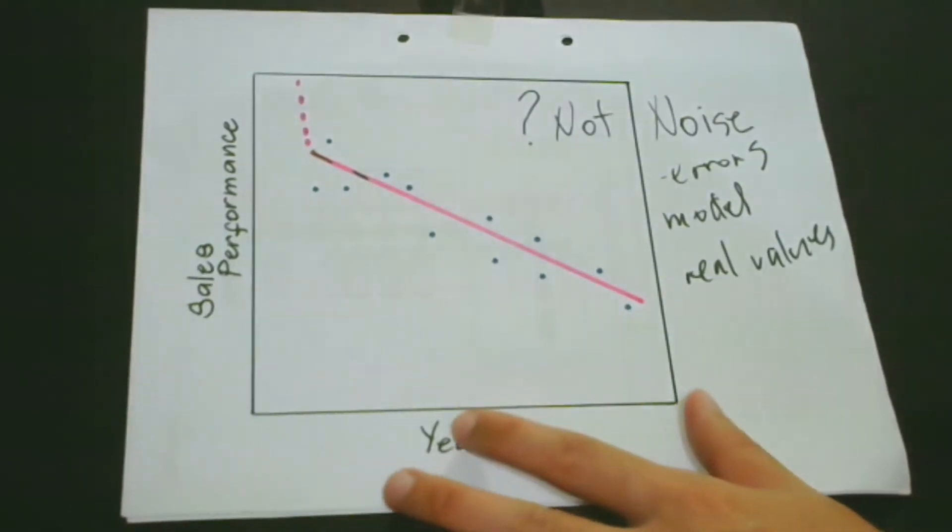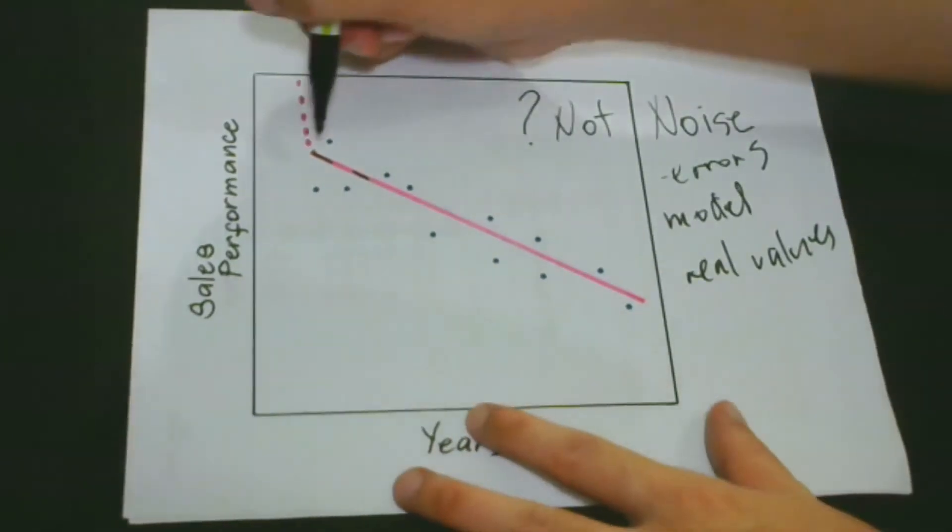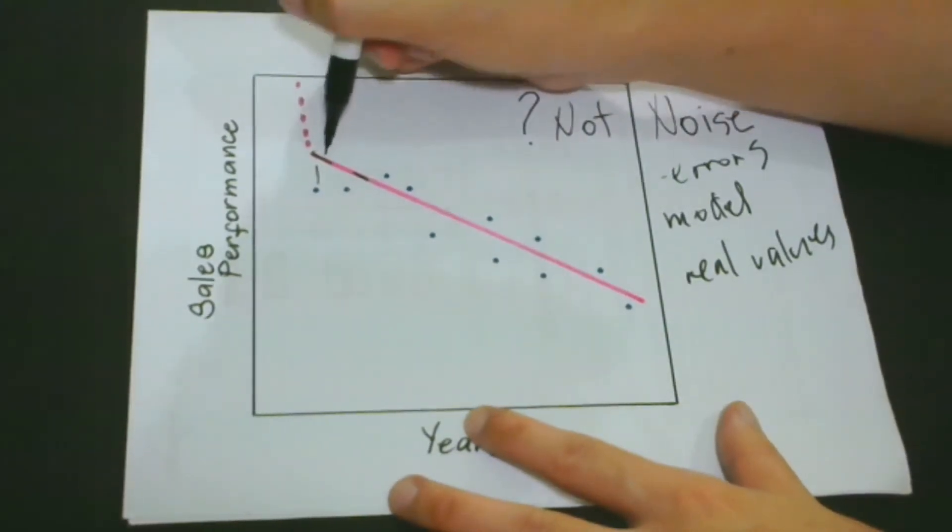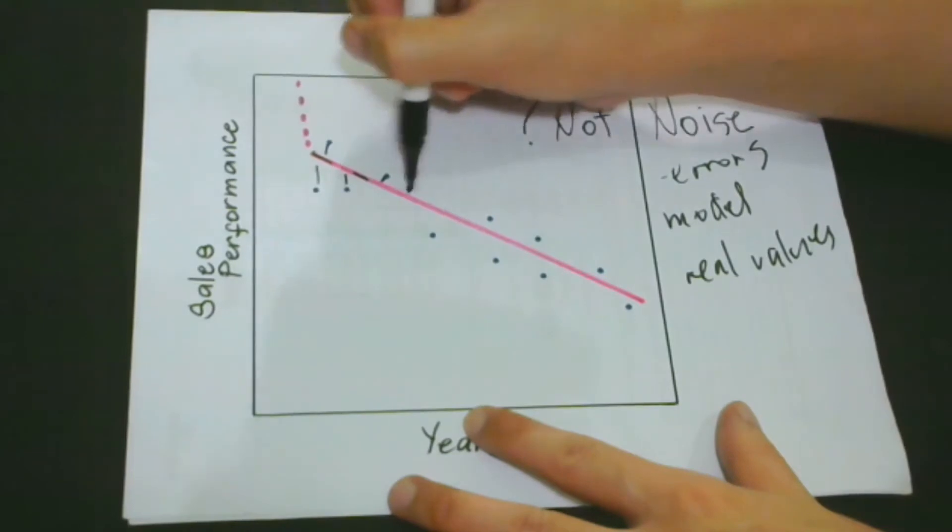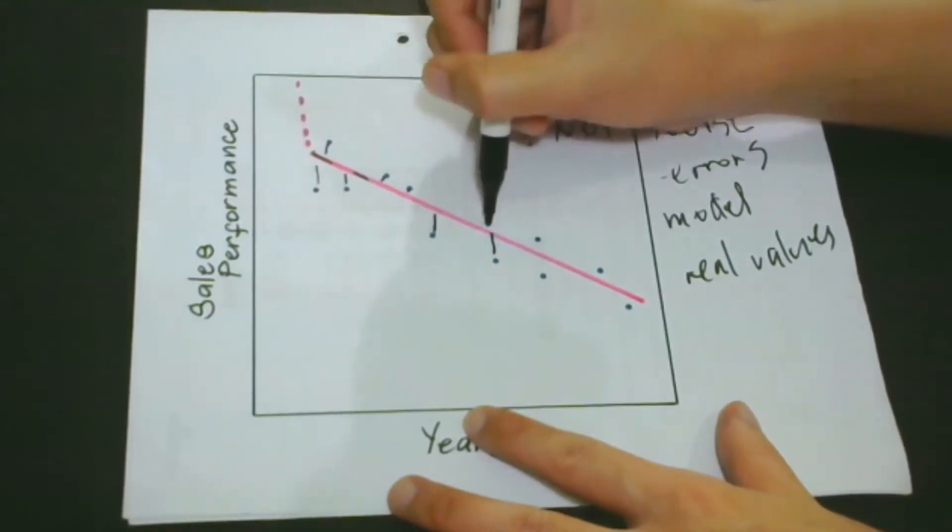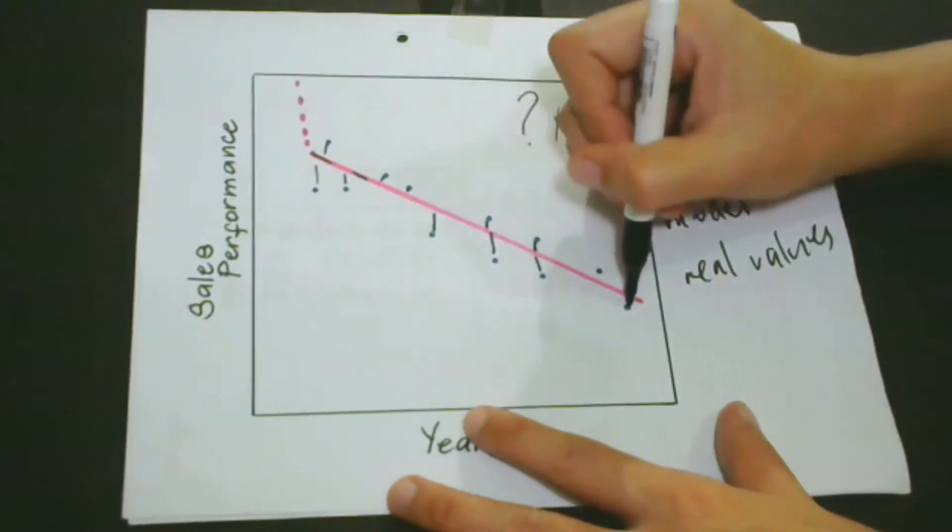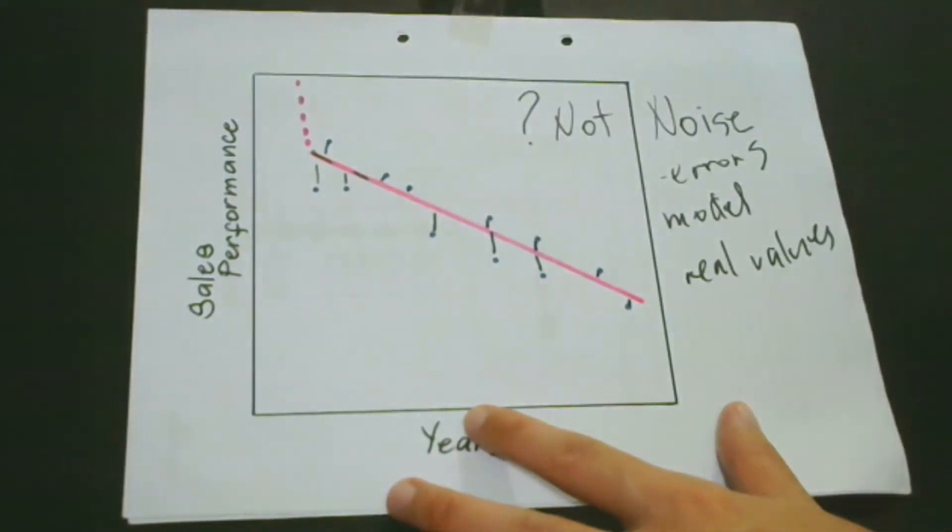Now, if we point out the distance of each point, which is the real value, to the model, then we can see that some are larger, some are smaller. For example, this one is larger. This one is smaller. These are the different differences between the values of the model itself and the real values.